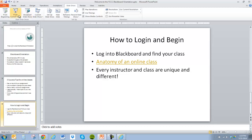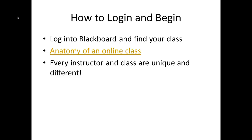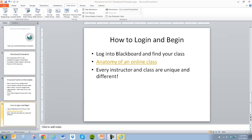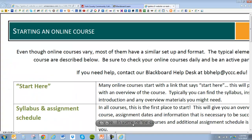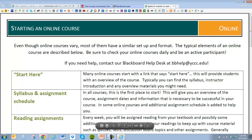One of the things I want to show you about an online class is that there are components that are typically available. Every instructor is different and unique, so the class is going to be unique. However, there's some structure that's similar across all classes. This is one of the resources listed in the Blackboard orientation — it tells you about the components of a course. Essentially it is a class you would have on campus, but now created online, so the environment is different but the assignments and nature of it are pretty similar.